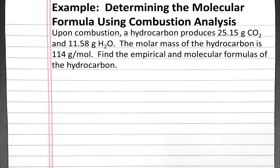In this example problem, we'll determine the molecular formula of a hydrocarbon using combustion analysis. Upon combustion, a hydrocarbon produces 25.15 grams of CO2 and 11.58 grams of H2O. The molar mass of the hydrocarbon is 114 grams per mole. Find the empirical and molecular formulas of the hydrocarbon.